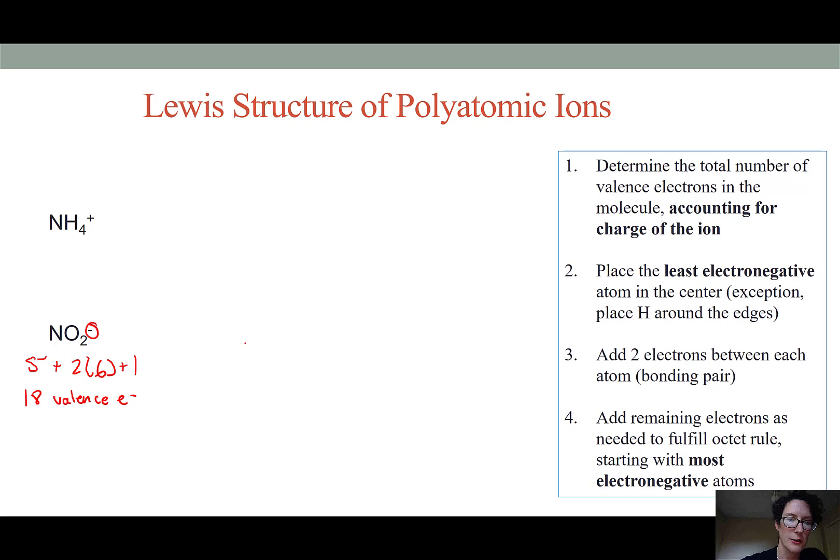Nitrogen is less electronegative than oxygen so we'll place that in the center and put a bond between it and each of the oxygens. I've now used up only 4 of my electrons. I have 14 left. I'll begin by adding these to the more electronegative atoms. 1, 2, 3, 4, 5, 6, 7, 8, 9, 10, 11, 12. Still have 2 left. I'll give them to the center atom, nitrogen.